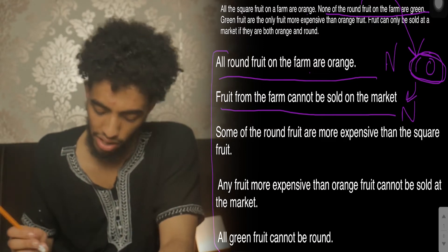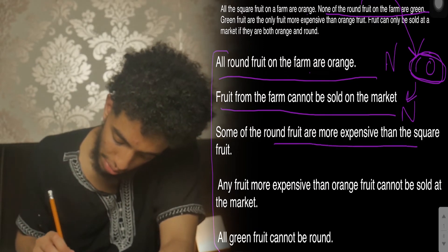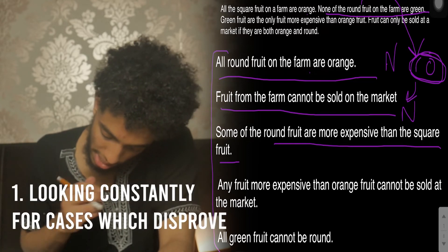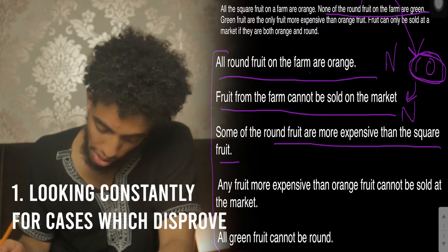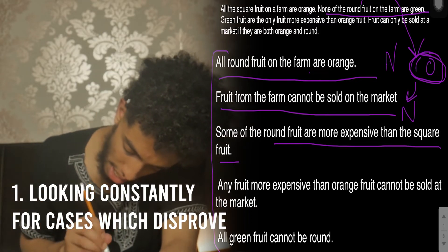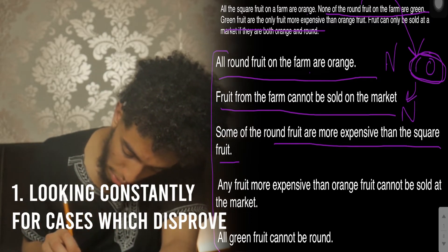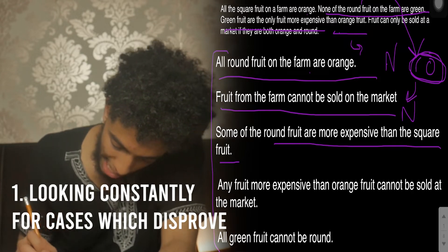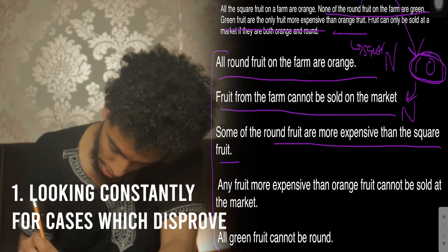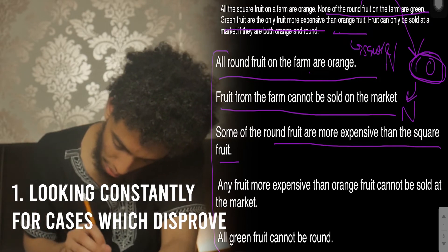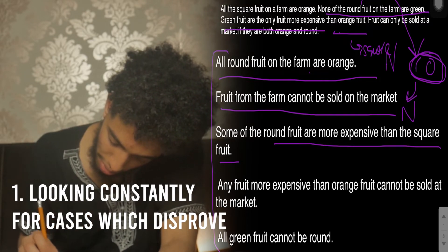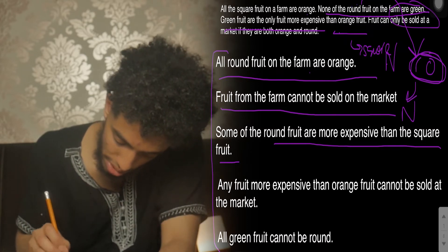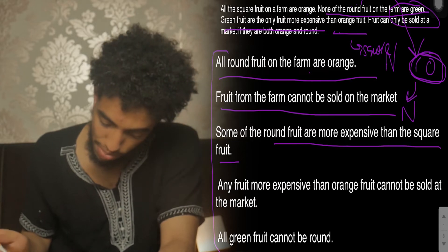Next conclusion: 'Some of the round fruits are more expensive than some of the square fruit.' It says green fruits are the only fruits more expensive than the orange fruit. The orange fruit can be the square fruit, and none of the round fruits on the farm are green — so the round fruits cannot be more expensive than the square fruits.